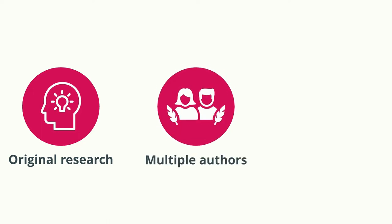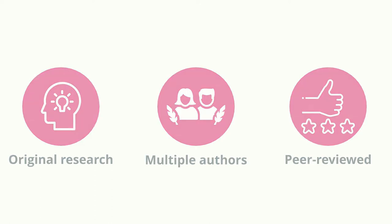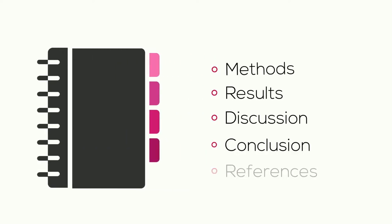Scholarly journals typically contain original research contributing to the academic discipline. They have multiple authors that help give the work depth. They have been peer-reviewed, so other authors accept it as something that adds value to the field. Scholarly articles will have specific sections to help you identify what you're reading, whether that's methods, results, discussion, conclusion, or references.